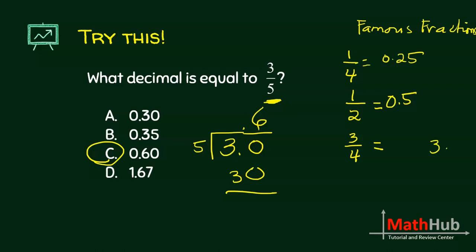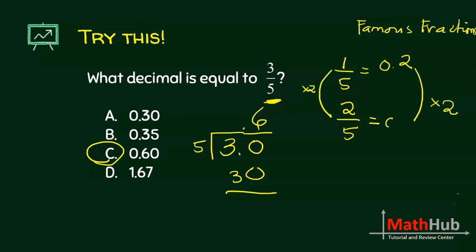What is 3 fourths? 3 fourths is 3 times 1 fourth. But 1 fourth is 0.25. So 3 times 0.25 is 0.75. Take note that this just came from 1 fourth being equal to 0.25.